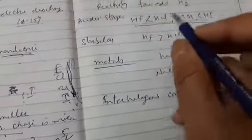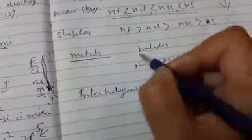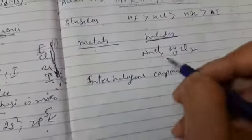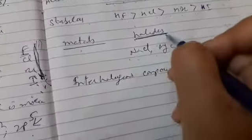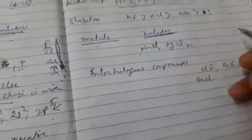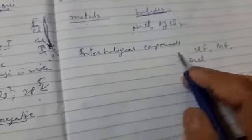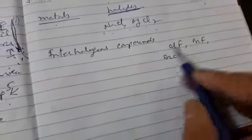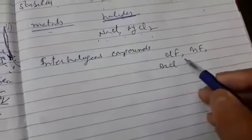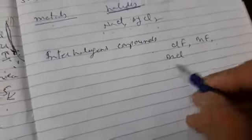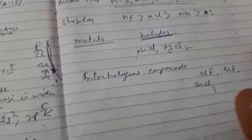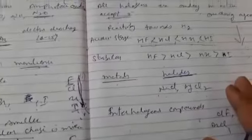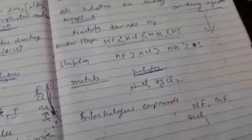When halogens react with metals, halides are formed — for example, NaCl and MgCl2. Some interhalogen compounds are also formed. Interhalogen compounds are formed between two different halogens, such as ClF, BrF, and BrCl. We will cover their chemical properties in the next session. Thank you.